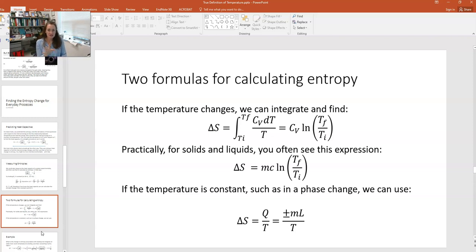Now for solids and liquids, the heat capacity we said was equal to the mass times the specific heat. And so that delta s would be mc times the natural log of T final over T initial. If you wanted to do this for a gas, you would use the molar specific heat and then multiply the number of moles times the heat capacity at constant volume.